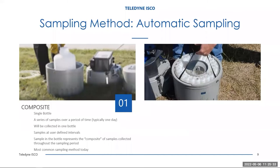For automated sampling — and these are portable samplers — for pathogen sampling, typically one would use a single bottle. A series of samples will be collected over a period of time, typically one day. Oftentimes that pacing will be time-paced where a sample is collected every 15 minutes throughout the full 24 hours. Samples are collected at user-defined intervals. The sample in the bottle represents the composite of all the flow that moved past that location over that sampling period — that 24-hour day. This is the most common sampling method used for this purpose.